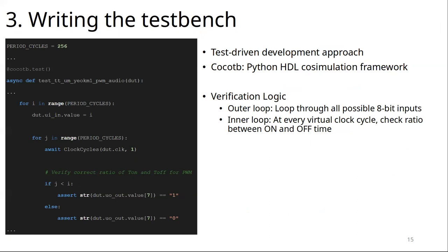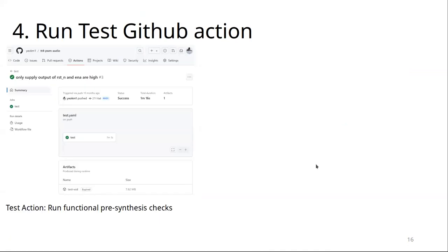For development, they practice test-driven development. You write the test first, then write the code. For testing, they use a framework called cocotb — a Python co-simulation tool — where you write your tests in Python and run them on your HDL. To test my PWM logic, I run through all possible inputs and check the output at every clock cycle. At a higher input value, the time the output is on must be more than the time it's off, and vice versa.